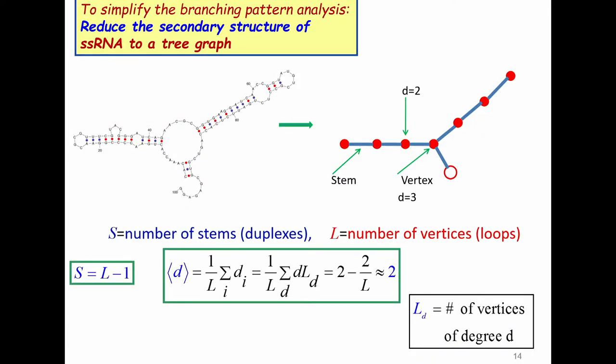We concluded that most likely it is something that has to do with the branching pattern of the molecule. To analyze the branching pattern we made a simplification. We take the secondary structure, we map it to a tree graph. It's very coarse-grained but you'll see it works nicely. We assume that all these loops are flexible joints and all the duplexes are stems. Very simple mapping. Just we want to understand the qualitative behavior. There are some simple relationships. By the way, the average degree is always two. It's two minus two over L, L being the total number of loops. LD is the number of vertices of degree D. Here you have one, three, degree three, degree two, degree one.